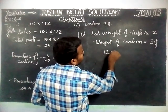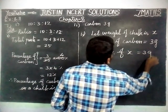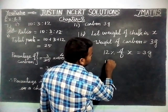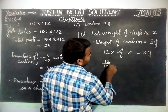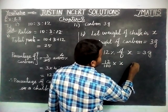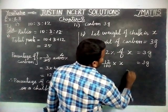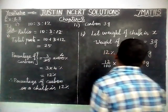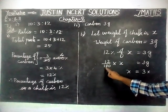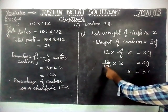12 percent of x is equal to 3 grams. So, 12 divided by 100 into x is equal to 3 grams. When 12/100 goes to the right-hand side, we take its reciprocal — reciprocal of 12 by 100 is 100 divided by 12.